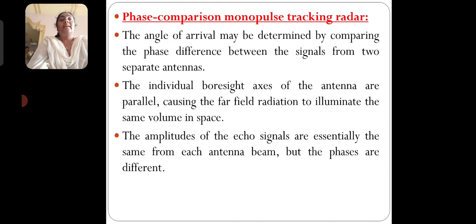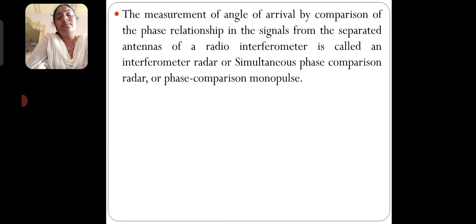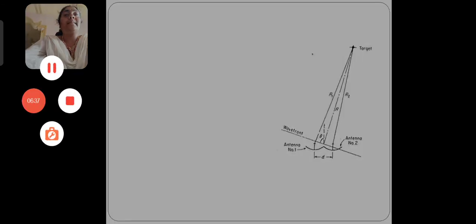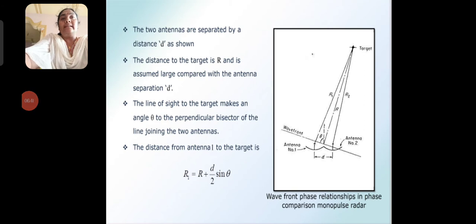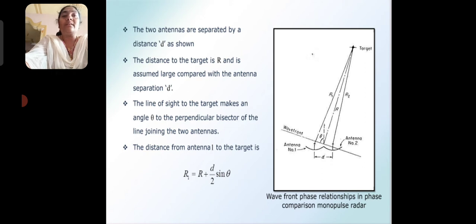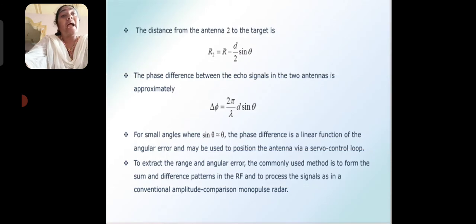The second method is the phase comparison monopulse tracking radar. The angle of arrival may be determined by comparing the difference between the signals from two separate antennas. The two antennas are separated by a distance D. The distance to the target is R, which is assumed large compared with the antenna separation D. The line of sight to the target makes an angle theta to the perpendicular bisector joining the two antennas. The distance from antenna 1 to the target is R1 = R + (D/2) sin θ, and from antenna 2, R2 = R − (D/2) sin θ.